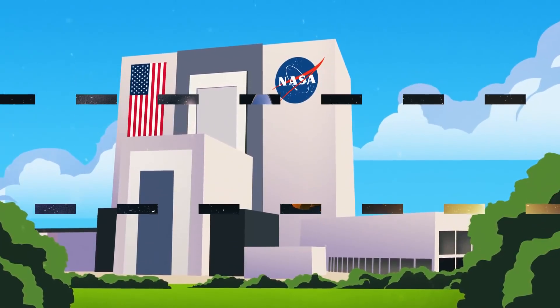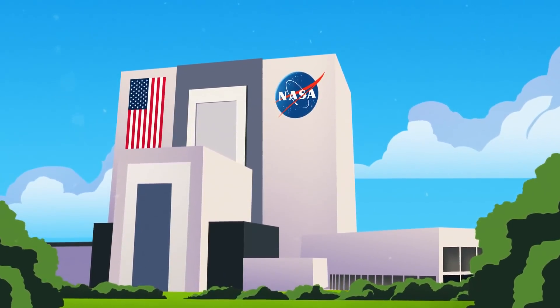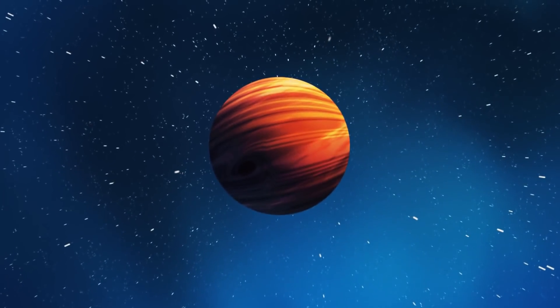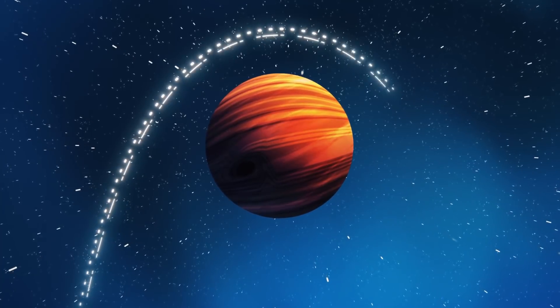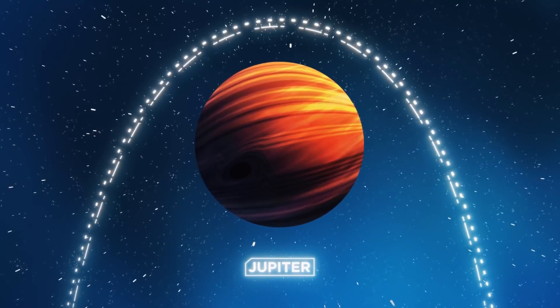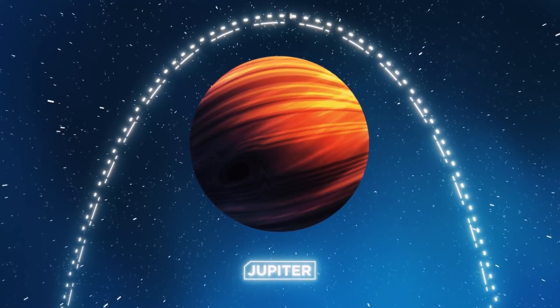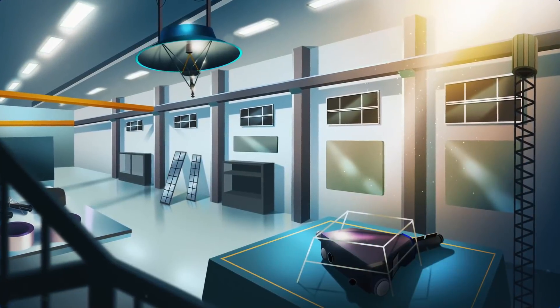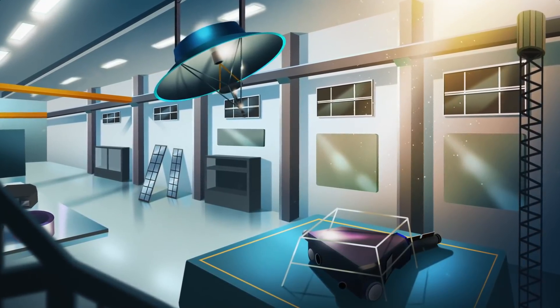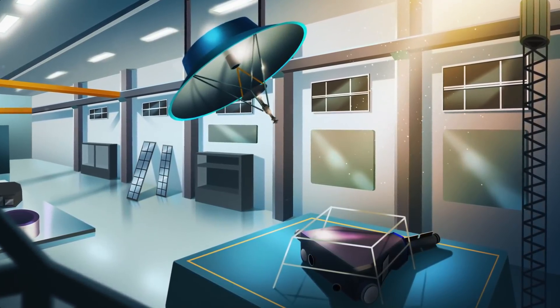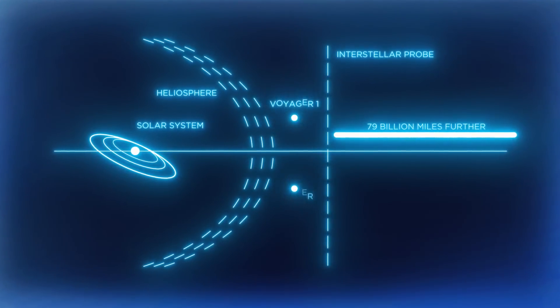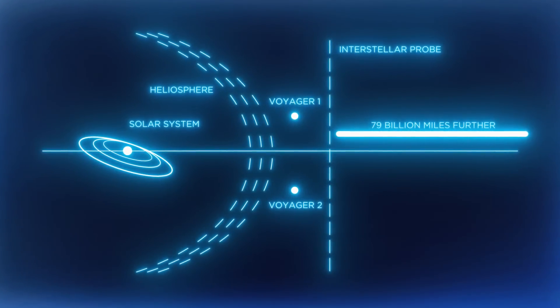The next interstellar spacecraft will not launch until at least the 2030s. NASA plans to slingshot a 1,700-pound nuclear-powered spacecraft around Jupiter and again around the Sun to propel this probe out of our solar system. The spacecraft is called Interstellar Probe, and it will travel 92 billion miles in just seven years. That's 79 billion miles further than Voyager 1 and Voyager 2 in a fraction of the time.